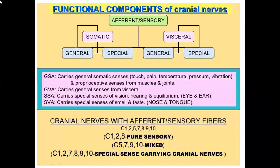This is a recap of the functional components of cranial nerves. They have a sensory component and a motor component. The sensory component, also called the afferent component, has somatic and visceral subdivisions: general somatic, special somatic, general visceral, and special visceral.